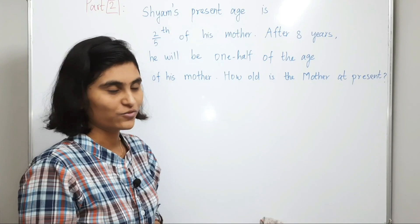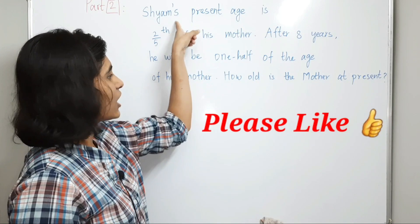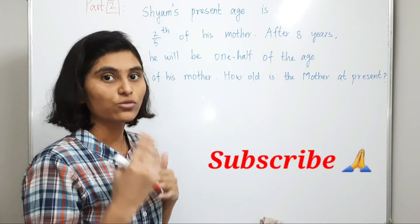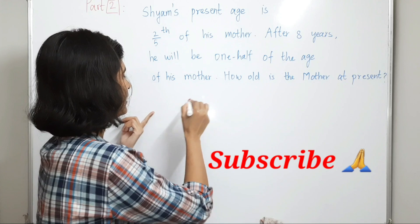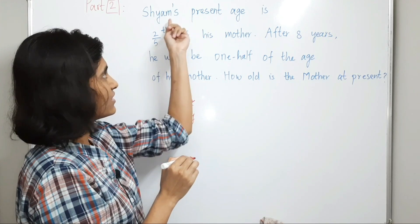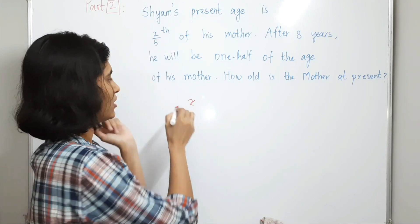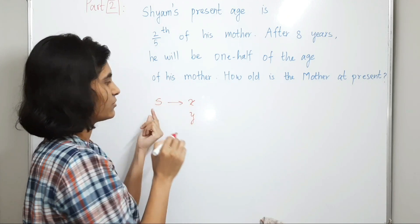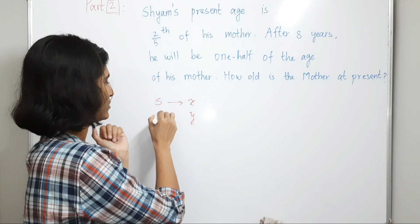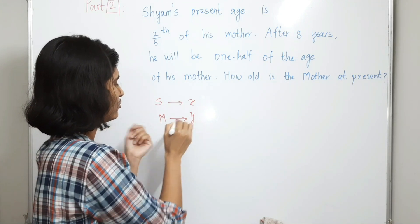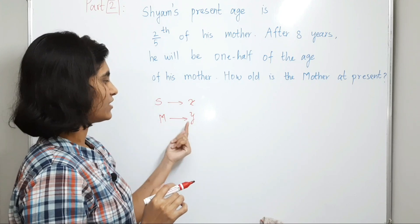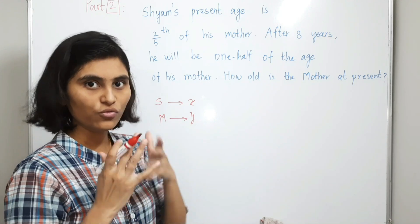Let's solve this question. Shams and his mother are two characters, so we have to use two variables. Let's take X and Y, where X is the present age of Shams — let's denote it by S — and Y is the present age of his mother, denoted by M. We have to find out what Y is — the present age of the mother.